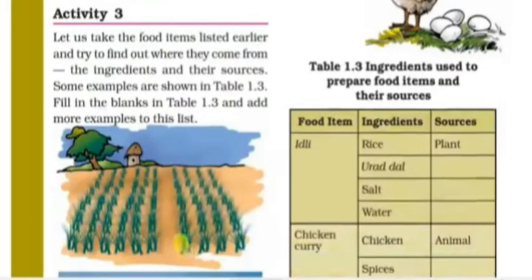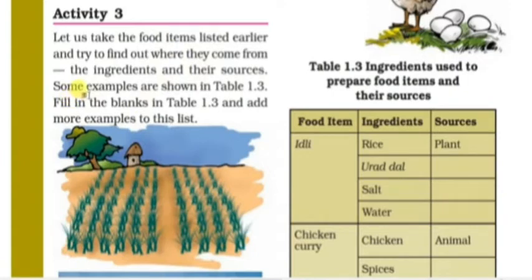Activity 3: Let us take the food items listed earlier and try to find out where they come from. We need to know their ingredients and the sources of those ingredients. Some examples are shown in Table 1.3. Fill in the blanks in Table 1.3 and add more examples to this list.